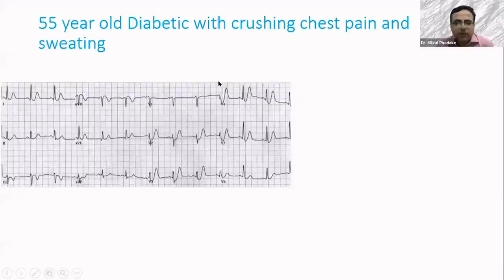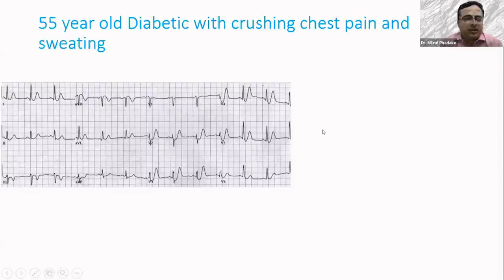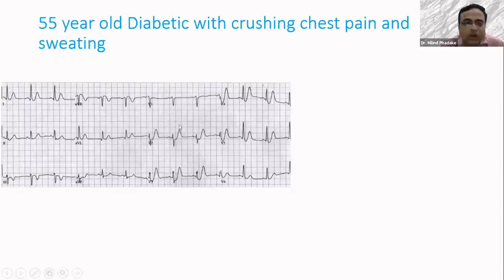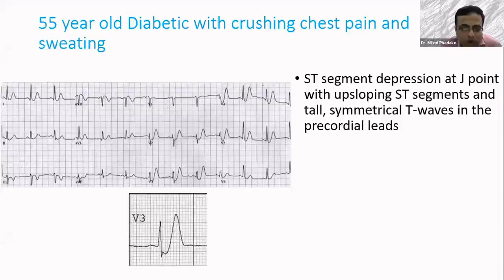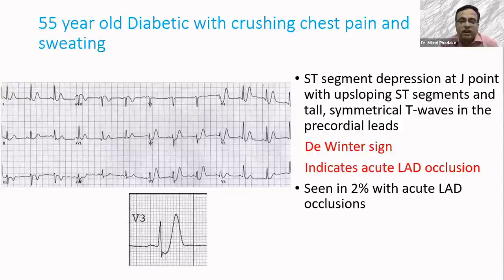The next is a 55-year-old diabetic with typical chest pain showing an interesting pattern — no ST elevation anywhere. Look carefully at leads V2, V3, V4, and V5: there is depression of the J point — ST depression — but tall T waves, and there are large R waves in leads V1 to V3. This is known as De Winter's sign. In lead V3: ST depression at the J point with upsloping ST segments and tall symmetrical T waves. This is considered a STEMI equivalent. It indicates acute LAD occlusion and should be treated just as if you have a patient with ST elevation MI. It is seen in about 2% of patients with LAD occlusions.